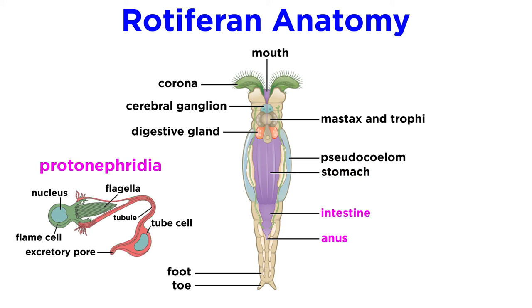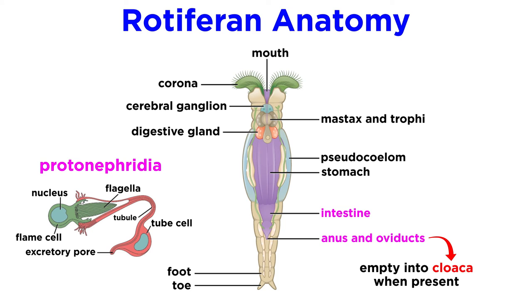The rotifer excretory system is comprised of a pair of protonephridial tubules that contain several flame cells, much like the free-living members of phylum Platyhelminthes. These tubules empty into a common bladder that contracts and empties waste into a bladder-like structure that fills up and expels its contents. Both the anus and oviducts also empty into the cloaca when present, though not all species have a cloaca.